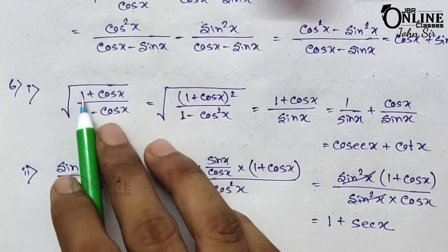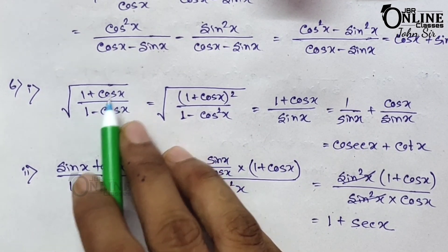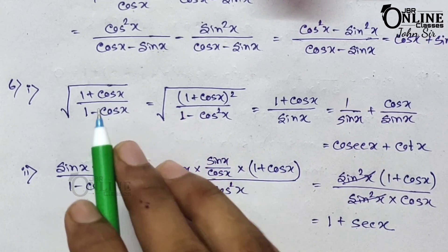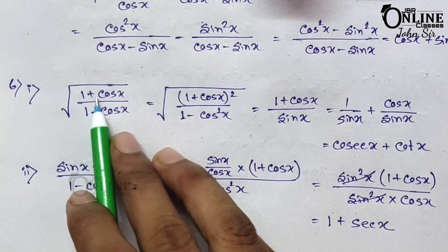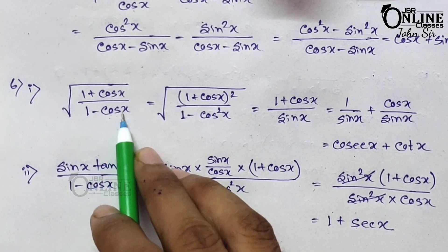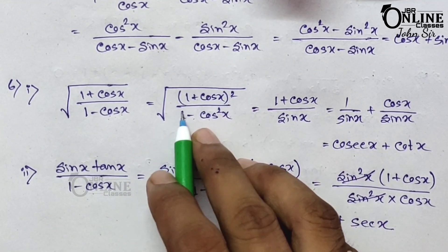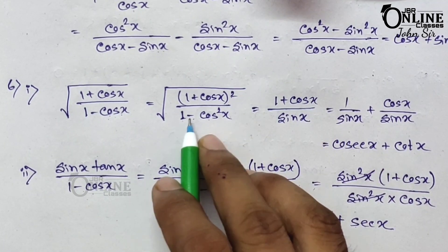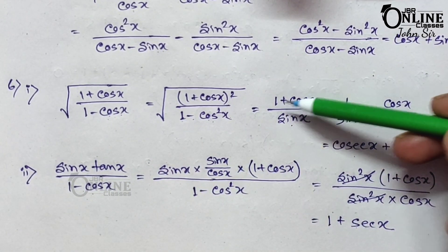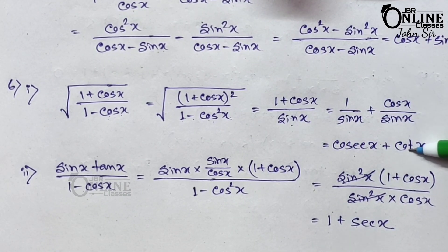Sum number 6.1: √((1 + cos x)/(1 − cos x)). Multiply numerator and denominator by (1 + cos x). The numerator becomes (1 + cos x)², and the denominator becomes 1 − cos²x = sin²x by the a² − b² formula. Taking the square root gives (1 + cos x)/sin x. Separating: 1/sin x + cos x/sin x = cosec x + cot x, proved.